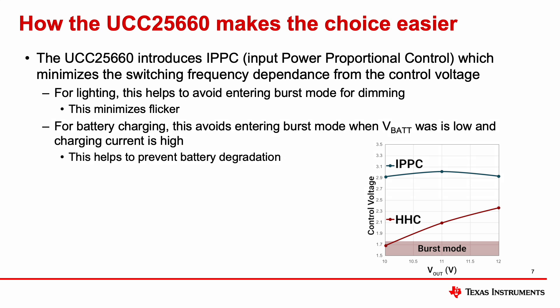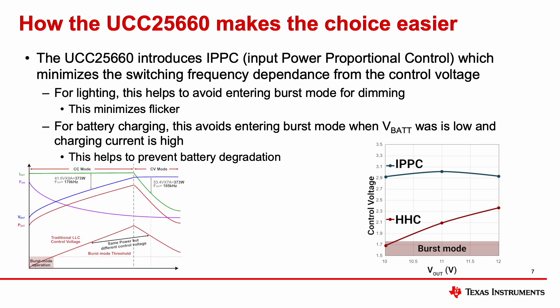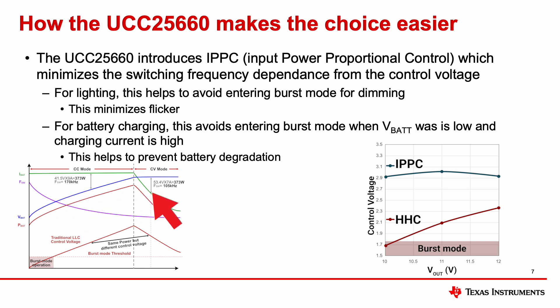For battery charging, IPPC helps to avoid entering burst mode when V-BAT is low and the charging current is high, which goes a long way in preventing battery degradation. The CCCV curve here shows traditional hybrid hysteretic control, and at the same power level of 373 watts in CC mode versus 373 watts in CV mode, you have a very different control voltage. This makes it much more difficult to avoid entering burst mode when you have the high constant current charging current.